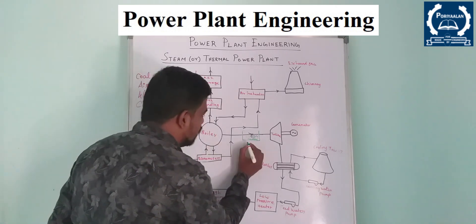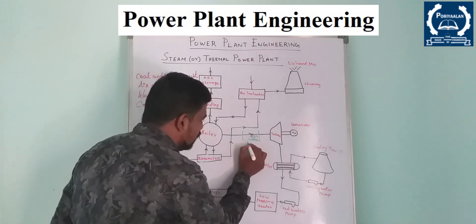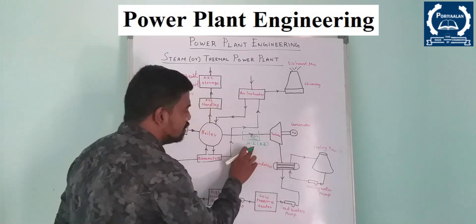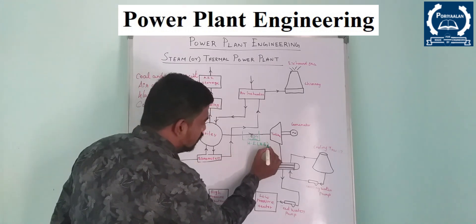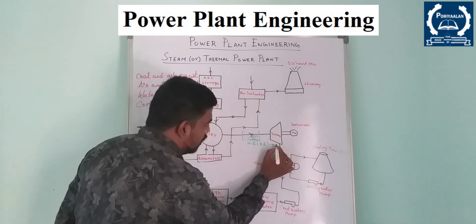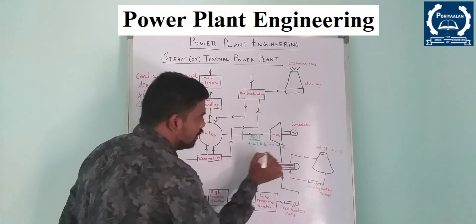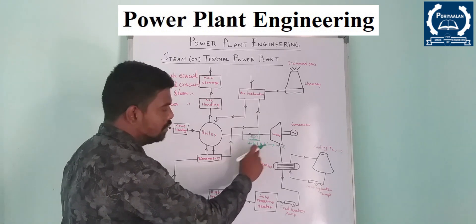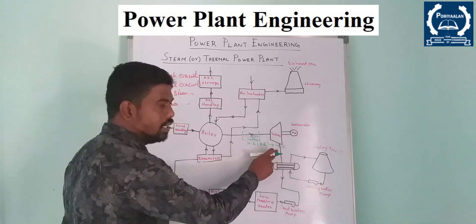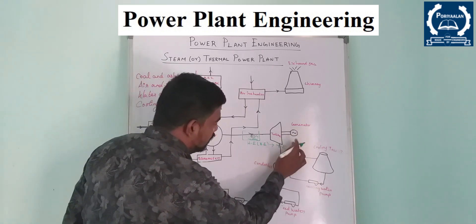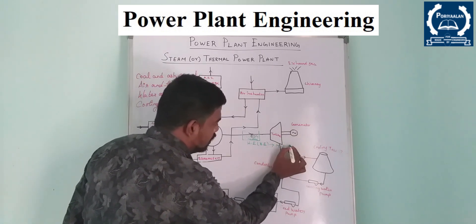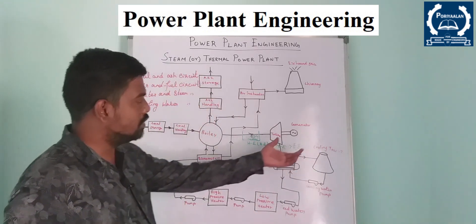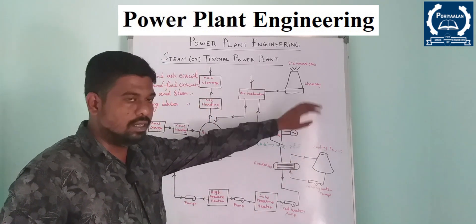Then the turbine blade will rotate. This is the energy conversion. The steam has heat energy, which converts to kinetic energy. The kinetic energy drives the turbine, converting heat energy to mechanical energy. The mechanical energy goes to the generator, which converts it to electrical energy. So we will generate power.